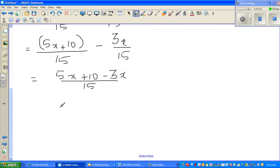Now I'm going to group the like terms. It's always good to do more number of steps in algebra rather than less number of steps because it's safe. You can simplify this too. You've got 5x take away 3x which is 2x plus 10 over 15.